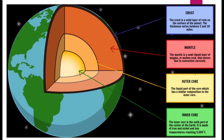A quick recap: The crust is a solid layer of rock on the surface of the planet, with thickness varying between 3 and 30 miles. The mantle is a semi-liquid layer of magma that moves due to convection currents. The outer core is the liquid part of the core. The inner core is the solid center of the Earth, made of iron and nickel, with temperatures reaching 5,500 degrees Celsius.